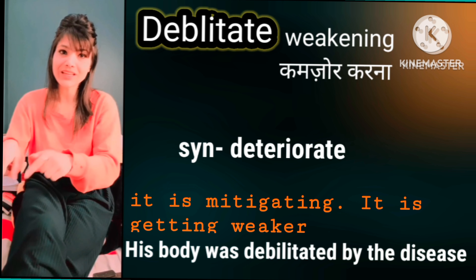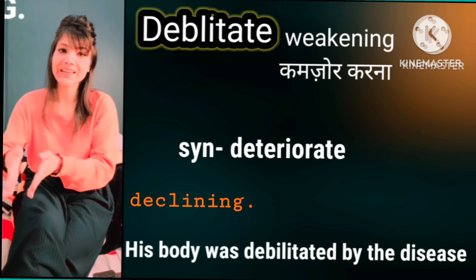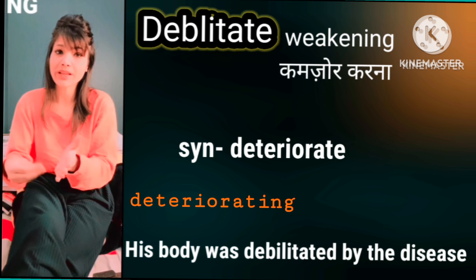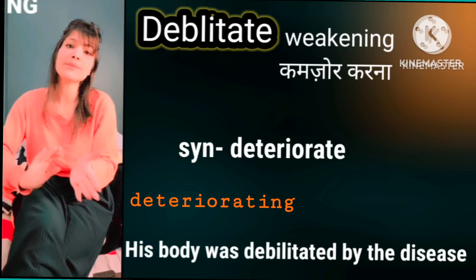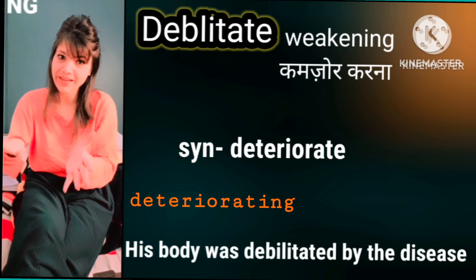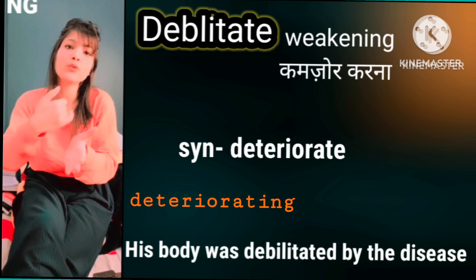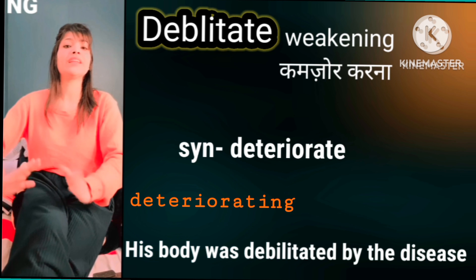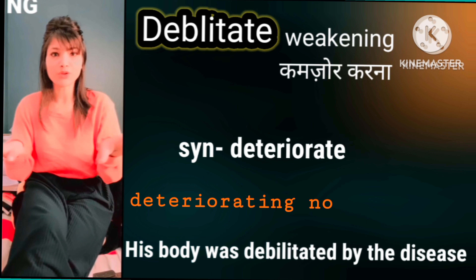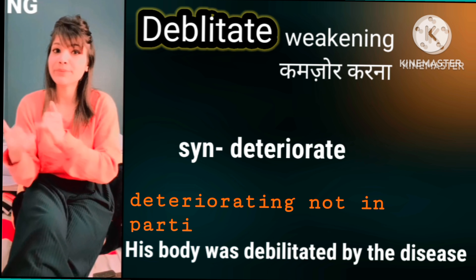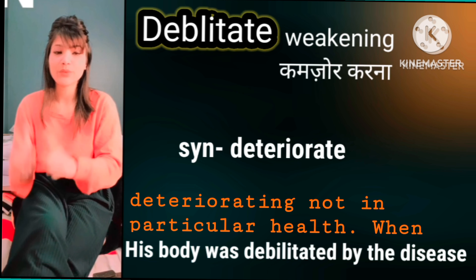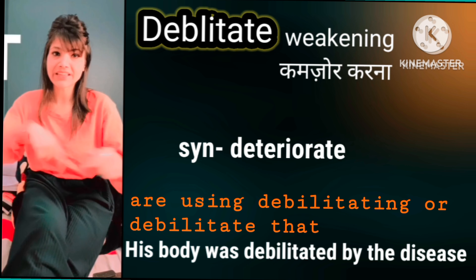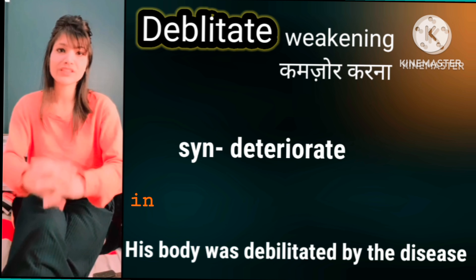While talking about 'deteriorate' — in any context, if something is deteriorating, it is getting weaker, it is declining. Deteriorating is used when in any context, kisi bhi context mein, you want to say something is becoming weaker or kamzor ho raha hai.